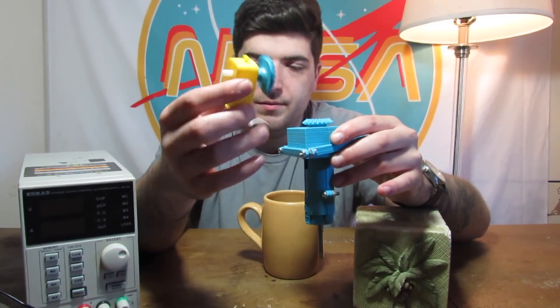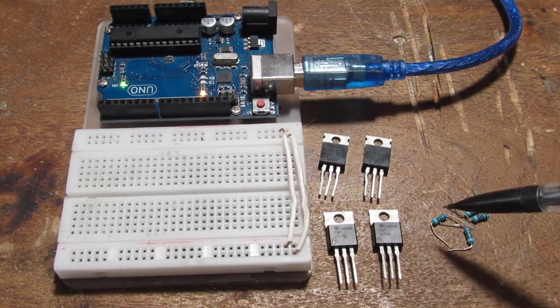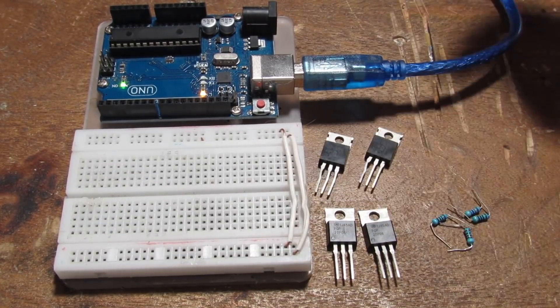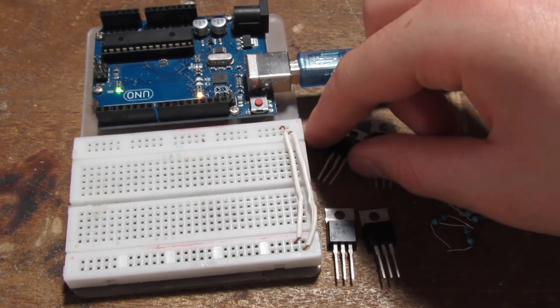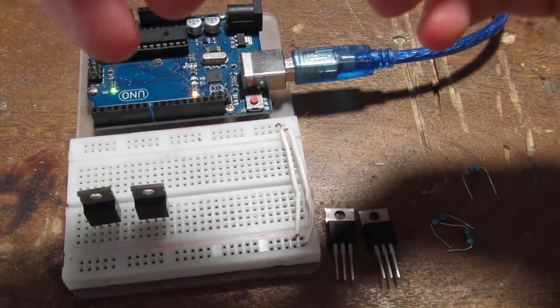Now for the H-bridge part. So for parts you're going to need two N channel MOSFETs, two P channel MOSFETs, and four 10k resistors. So I'm going to start with the N channel MOSFETs. The 10k resistors are for the gates.